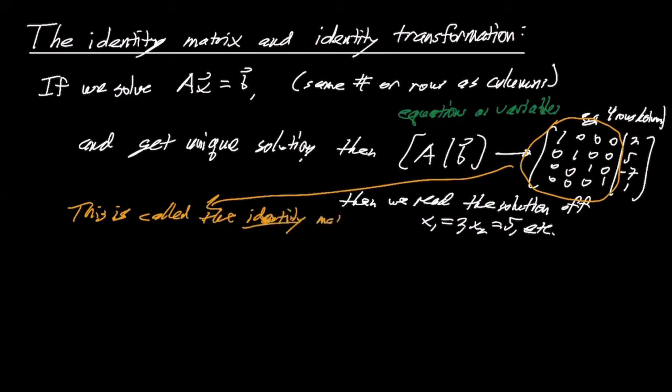So partly it's the simplest matrix that can show up when you're trying to solve a system of equations. If you can get to that point then you're great, you're done. So it's labeled I, or sometimes if you want to know, for the n by n identity.